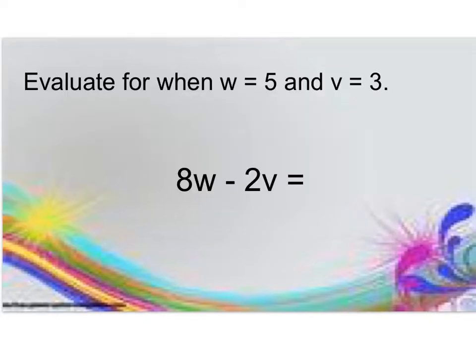We're going to evaluate when we have coefficients. Remember that this 8 means 8 groups of w or 8 times w. This coefficient 2 means 2 groups of v or 2 times v. We start the same way: I look for my w, which is worth 5, and my v, which is worth 3.